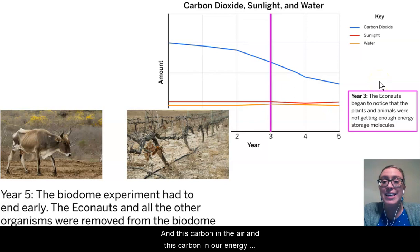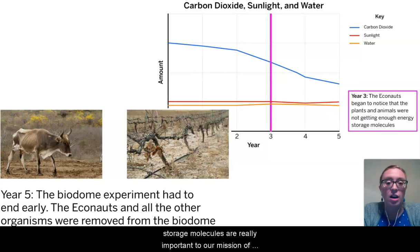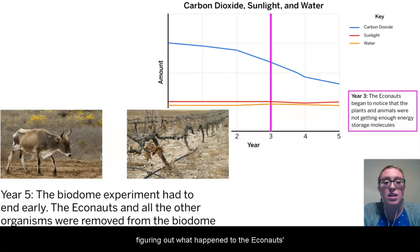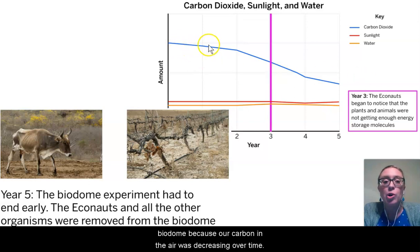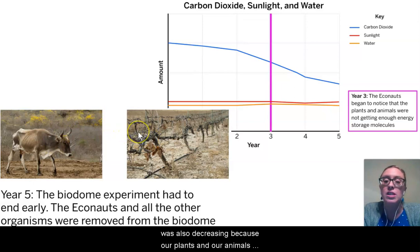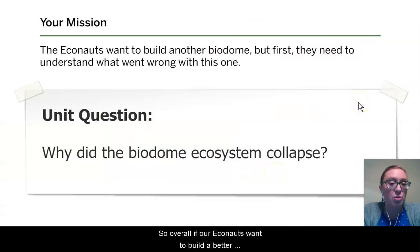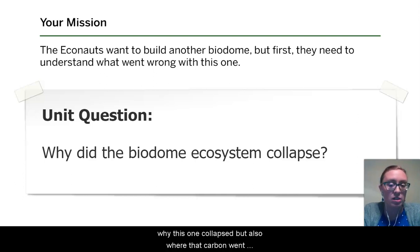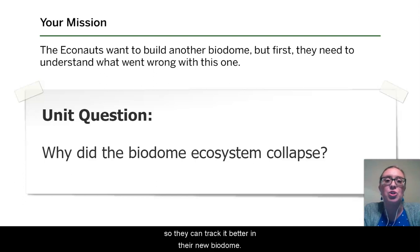This carbon in the air and carbon in our energy storage molecules are really important to our mission of figuring out what happened to the Econauts' biodome, because our carbon in the air was decreasing over time. The carbon in the form of energy storage molecules was also decreasing because our plants and our animals didn't have enough of them in order to survive. Overall, if our Econauts want to build a better biodome, they need to know not just why this one collapsed, but also where that carbon went so they can track it better in their new biodome.